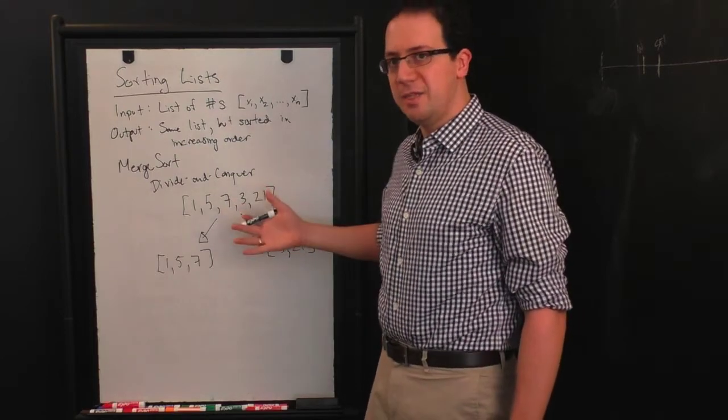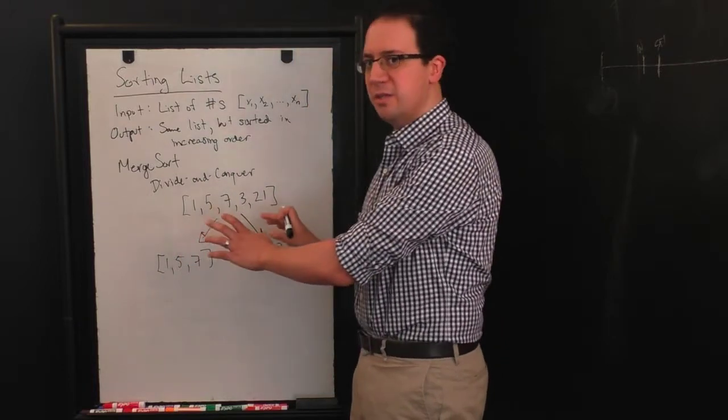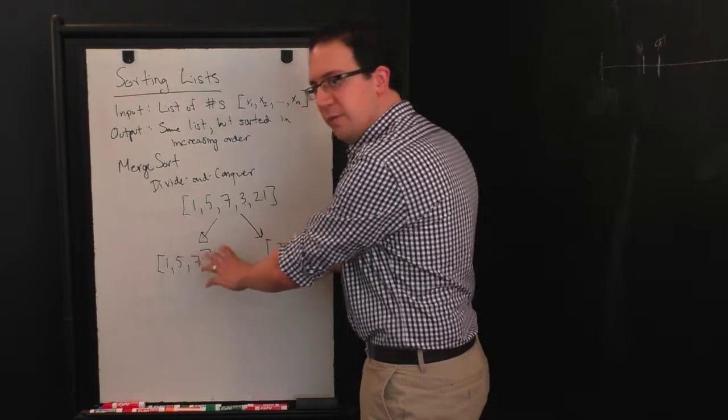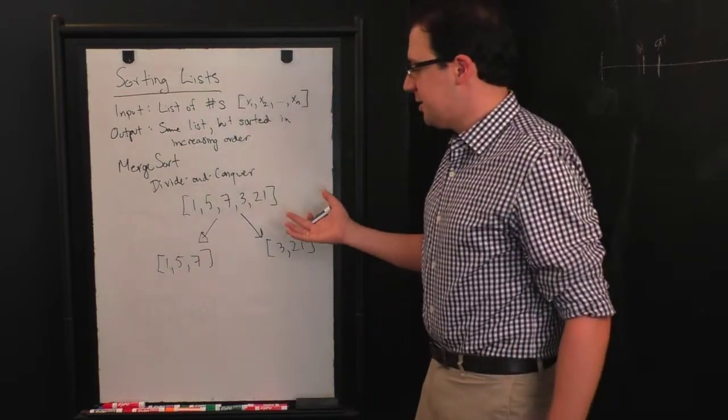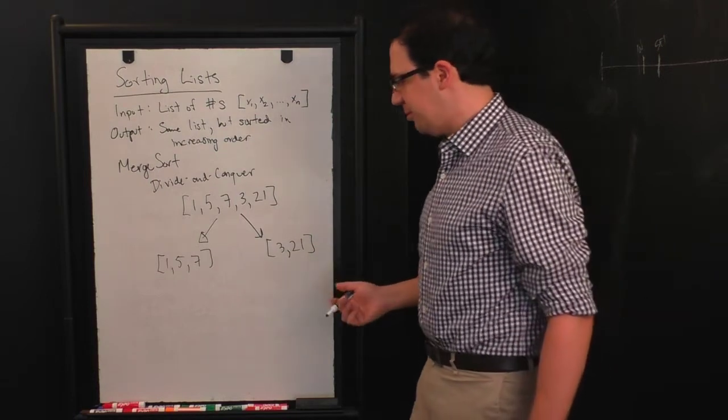And then you now recursively call merge sort on these smaller lists, which is then going to split those in half and so on. But let's just assume for the moment that merge sort actually sorts lists. So you're going to use merge sort on this to sort it, turns out this in this example, this is already sorted, you're going to use merge sort here to sort this, this is already sorted. And so that was the divide step, right? I cut my input roughly in half. Dividing doesn't always have to be in half. But in this case, it's useful. I solve the smaller problems. And now the question is, how do I combine those back to a solution of the bigger problem?